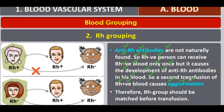But if an RH negative person receives RH positive blood a second time, then there is a serious problem — it can end the life. Therefore, RH group should be matched before transfusion. Blood group A, B, AB should be matched, and blood group positive or negative — the RH factor — whether the person is RH positive or RH negative should be matched before blood donation.